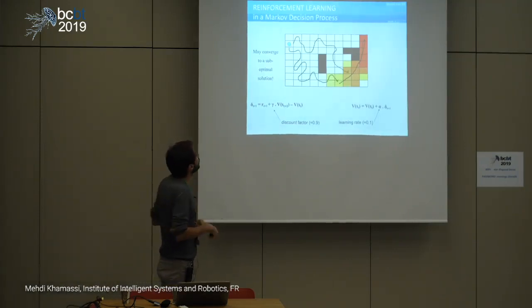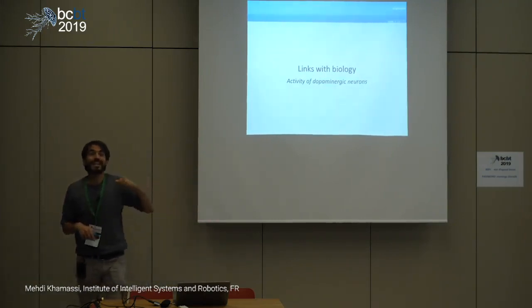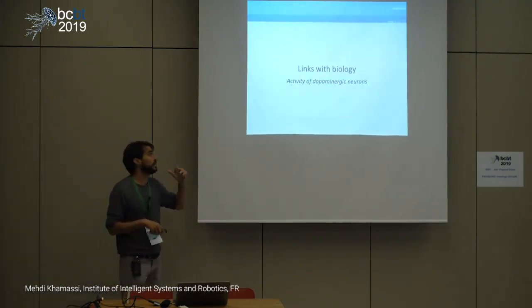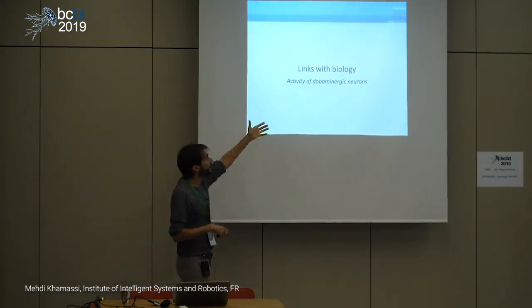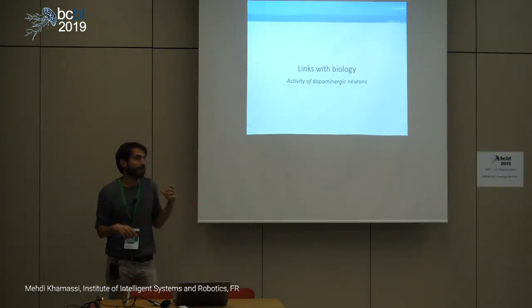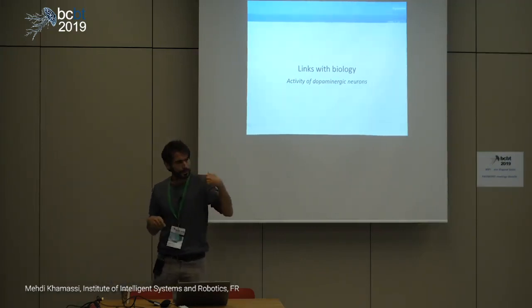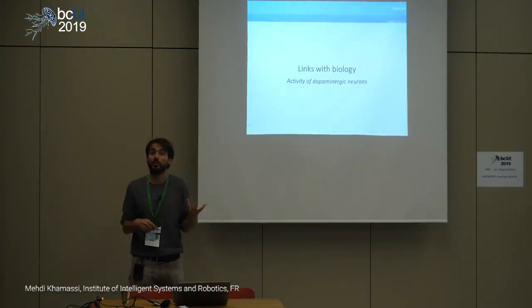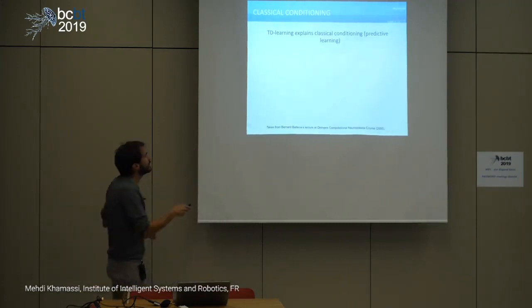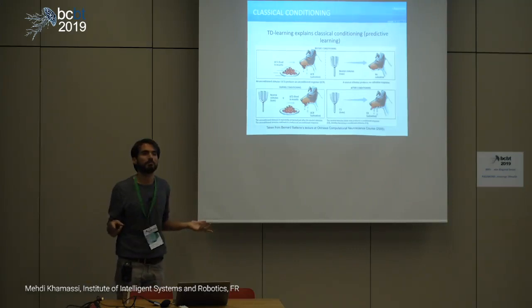That's exactly what happens during classical conditioning. And in these types of experiments, people found that dopaminergic neurons — their phasic activity — encodes some reward prediction error.